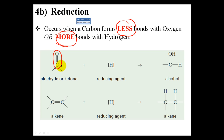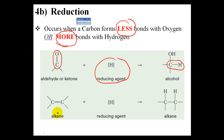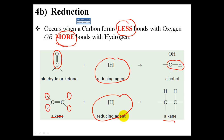With a C=O we had two bonds with oxygen, but by reducing it — the symbol for a reducing agent is [H] with square brackets — we now only have one oxygen bond and we have an extra carbon-hydrogen bond. So this aldehyde or ketone has been reduced to an alcohol. Similarly, we can reduce alkenes into alkanes — the C=C double bond is broken, freeing two extra bond sites, one on either carbon, and those sites are filled with hydrogens.